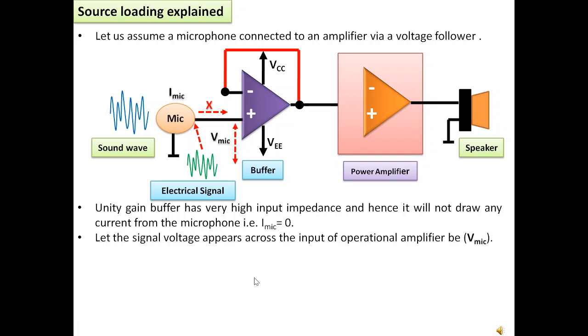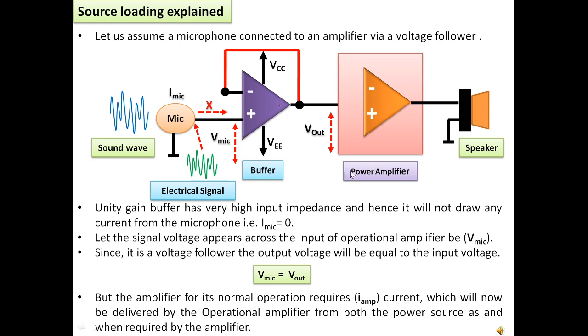The signal voltage coming out of the microphone will be directly available at the input of the operational amplifier. And since it's a voltage follower, the same output will be available at the output of the operational amplifier. But the amplifier for its normal operation requires certain amount of current, which will now be delivered by the operational amplifier from both the power sources as and when required by the amplifier.